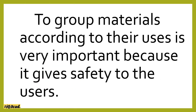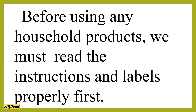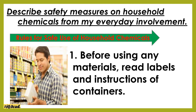To group materials according to their uses is very important because it gives safety to the users. Before using any household products, we must read the instructions and labels properly first. These are the rules for safe use of household chemicals. First, before using any materials, read labels and instructions on containers.